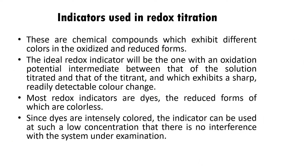What are the indicators used in redox titration? These are chemical compounds which exhibit different colors in oxidized and reduced forms. The ideal redox indicator will be the one with an oxidation potential intermediate between that of the solution titrated and that of the titrant — the sample in the conical flask and the titrant in the burette — and which exhibits a sharp, readily detectable color change. Most redox indicators are dyes, the reduced forms of which are colorless. Since these dyes are intensely colored, the indicator can be used at such a low concentration that there is no interference with the system under examination.